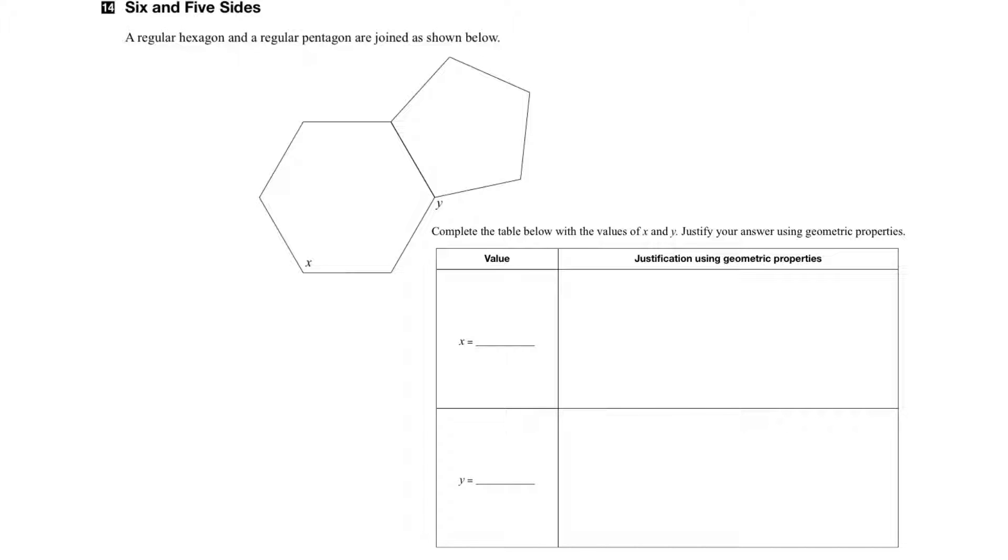Well, if these are regular shapes, then we know that the sides will all be equal, so that side would equal that side. And since they're attached, this side would equal this side, would equal this side, would equal this side.